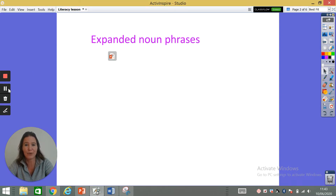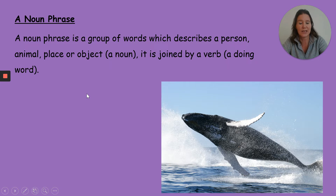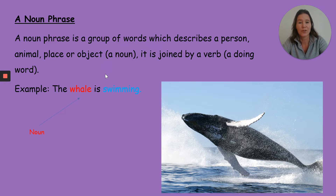What is an expanded noun phrase? A noun phrase is a group of words which describes a person, an animal, place or object. They are the noun, joined by a verb which is the doing word. Here we have a whale, and a very simple sentence: the whale is swimming. The noun in this sentence is the whale, and the verb is swimming because that's what the whale is doing — that's the verb, the doing word.